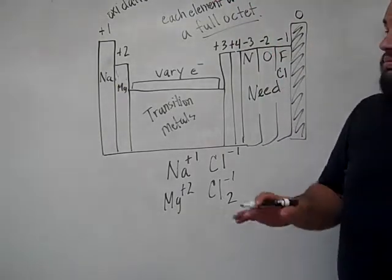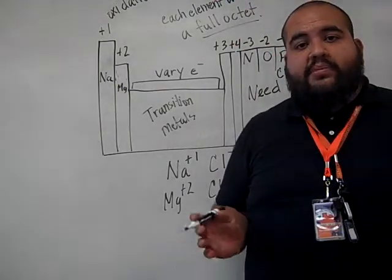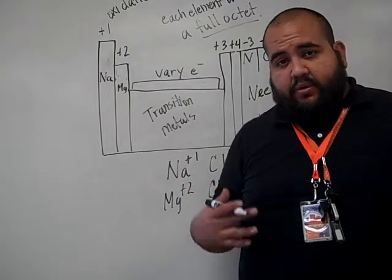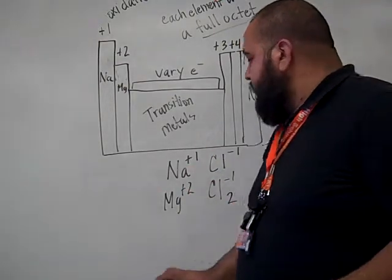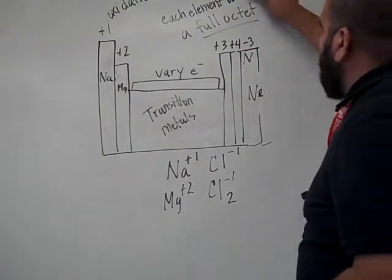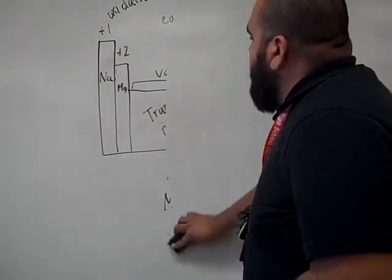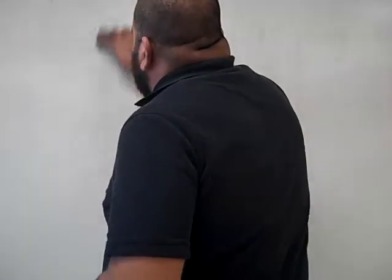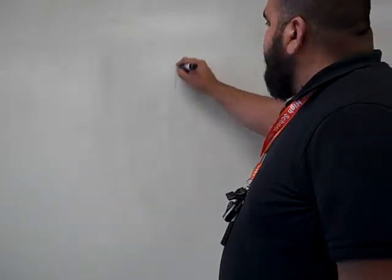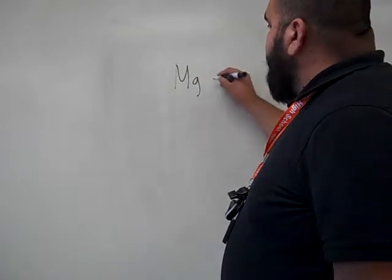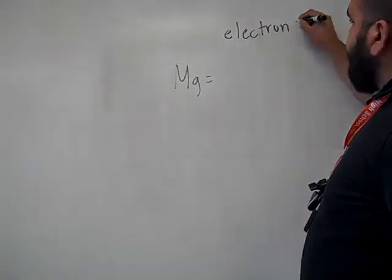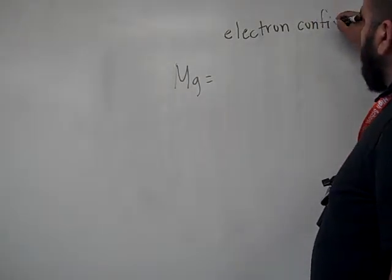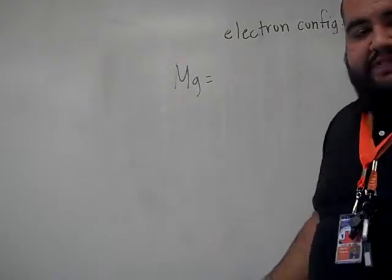Now, how do we obtain the number of valence electrons available from each element? Let me show you. This you should know. If we look, for example, at magnesium.